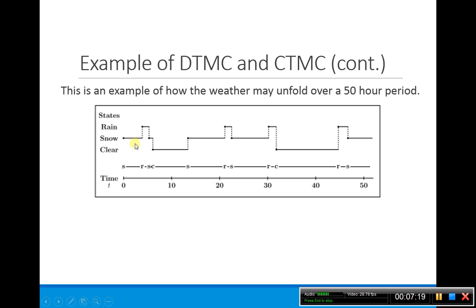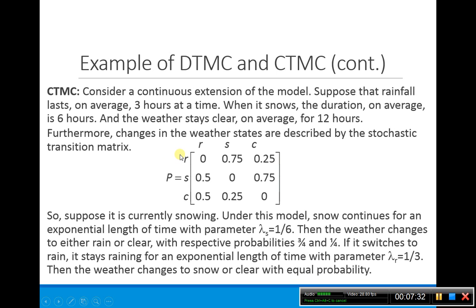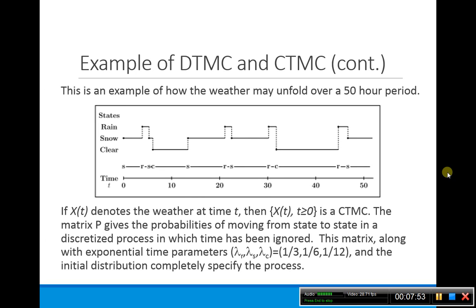Notice that if it's snowing, it has more chance of turning to rain than to clear, because of the probability transition matrix — the likelihood of changing from snow to rain is 0.75, whereas changing from snow to clear is only 0.25, so it's three times more likely. If x(t) denotes the weather at any time t, then this is a continuous time Markov chain. The matrix P gives the probability of moving from one state to another in the discretized process in which time has been ignored. The amount of time spent in each state follows an exponential distribution with parameters lambda_r, lambda_s, and lambda_c.